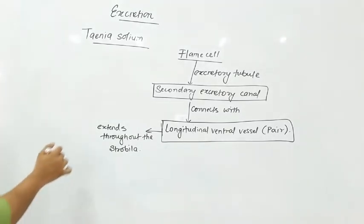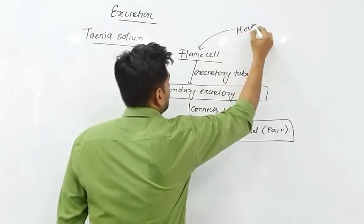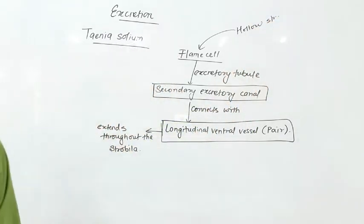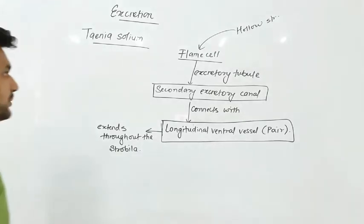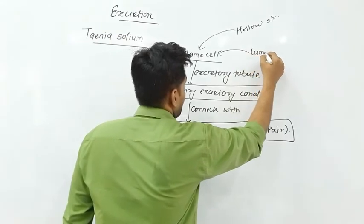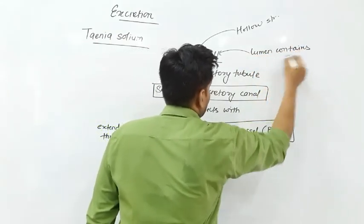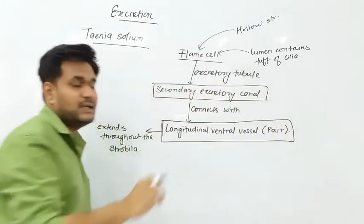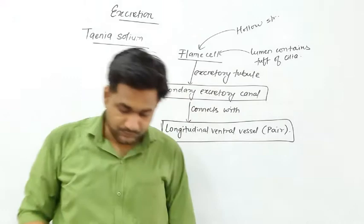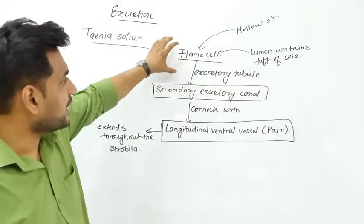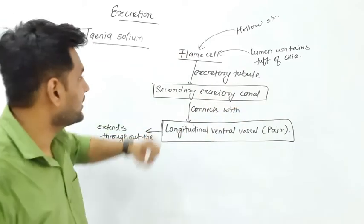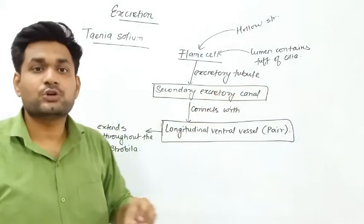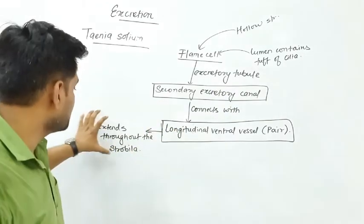The flame cell is a hollow structure — it has a pipe-like structure with a lumen. The lumen is filled with a bunch of cilia. The cilia continue to move, which helps in the excretory process. The flame cell connects to the excretory tubule, then to the secondary excretory canal, and then to the longitudinal vessel.